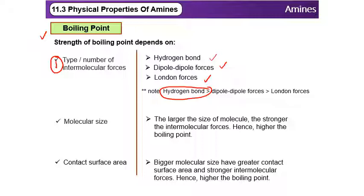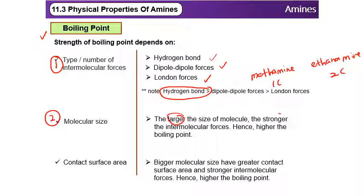Besides intermolecular force, we can also consider molecular size. For example, methanamine has only one carbon compared to ethanamine which has two carbons. The larger the molecular size, the stronger the intermolecular force — specifically the London dispersion force — so the boiling point will be higher. We can also relate this to contact surface area: the bigger the molecular size, the larger the contact surface area, meaning stronger intermolecular forces and a higher boiling point.